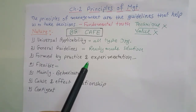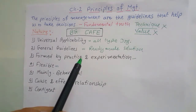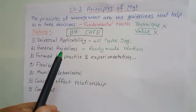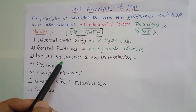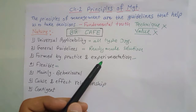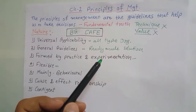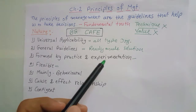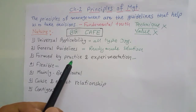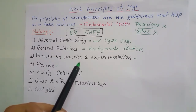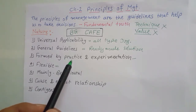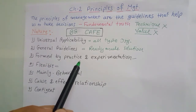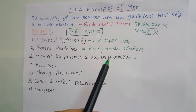Next is formed by practice and experimentation. These principles of management have not been developed overnight. The principles developed by Henry Fayol and F.W. Taylor were developed through their practice in their organizations. At the same time, they also conducted experimentation — like F.W. Taylor conducted motion study, time study, and fatigue study to increase the efficiency of workers. Henry Fayol also conducted observations, and on the basis of those observations he developed these principles of management. So we can say these principles are formed by practice, experimentation, and observation.